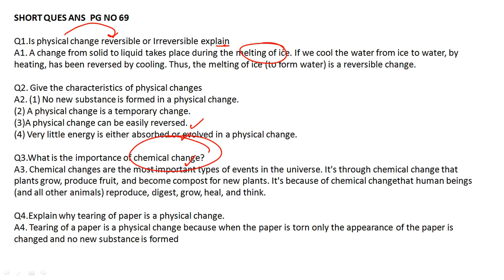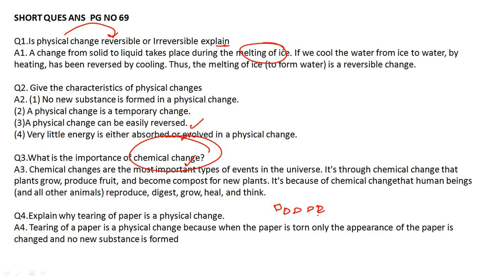Fourth question: explain why tearing of paper is a physical change. Tearing of paper is a physical change because if the paper is torn, its appearance remains as paper — it does not become a new substance. Even in small pieces, it remains paper.